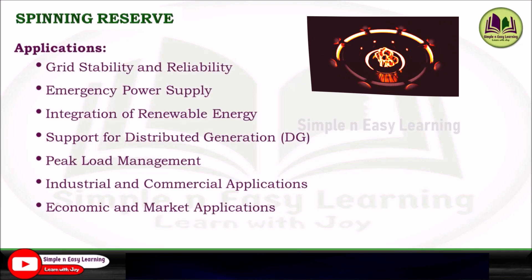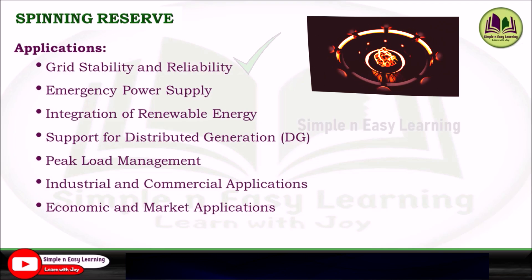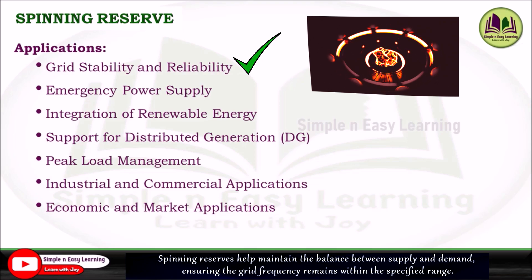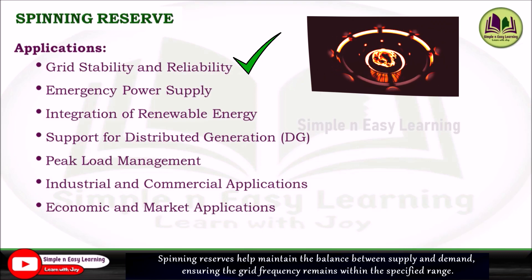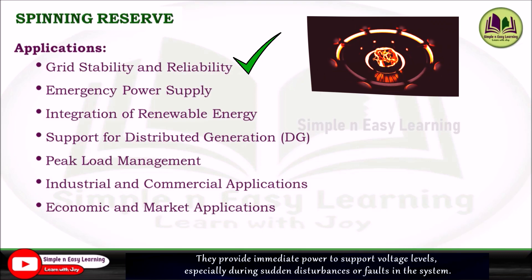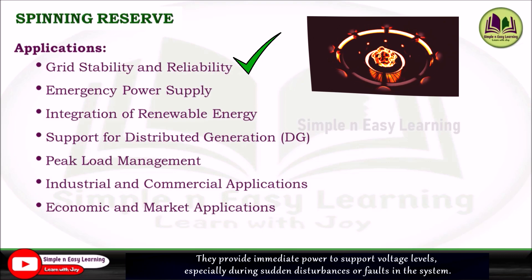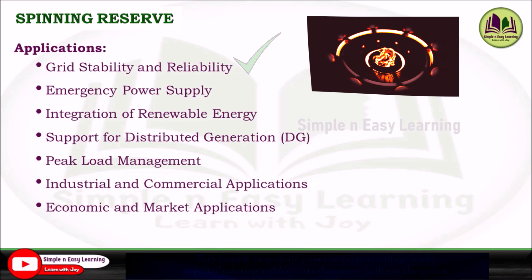Now we will see some applications of spinning reserve. The first is grid stability and reliability. Spinning reserves help maintain the balance between supply and demand, ensuring grid frequency remains within the specified range. They provide immediate power to support voltage levels, especially during sudden disturbances or faults in the system.